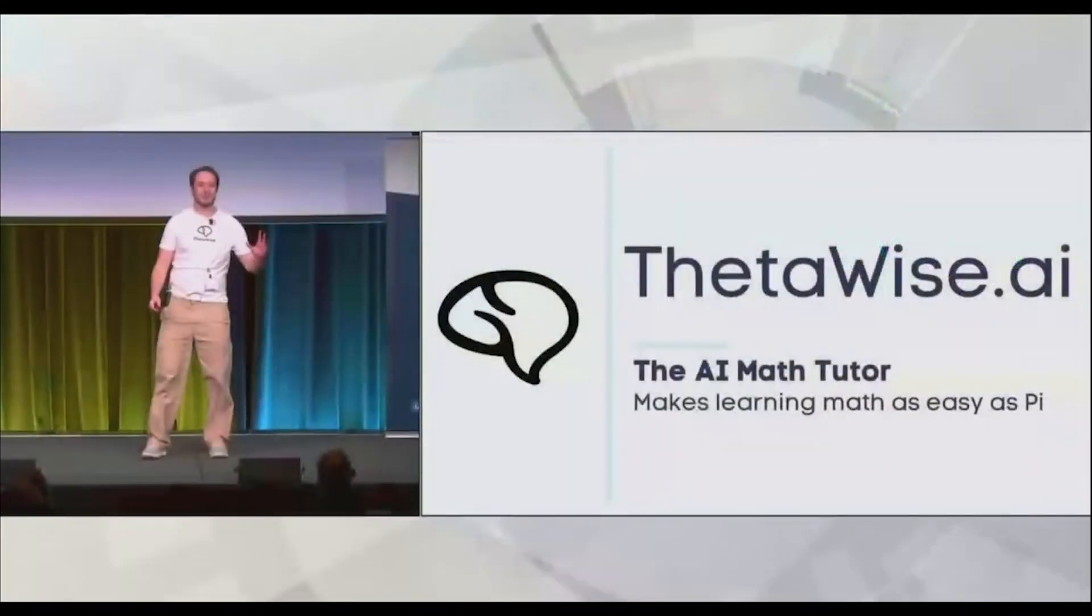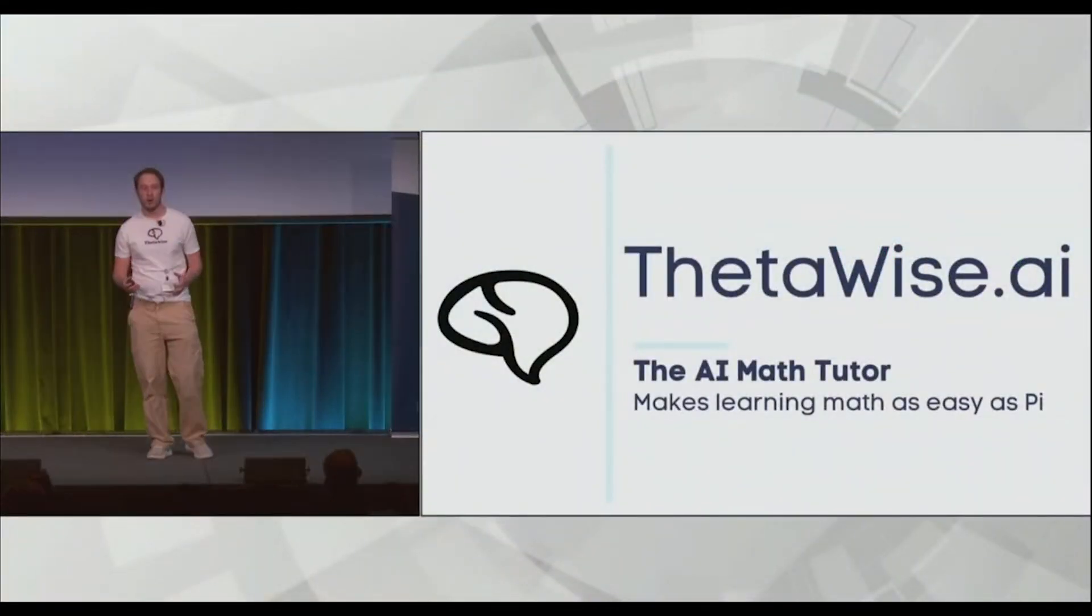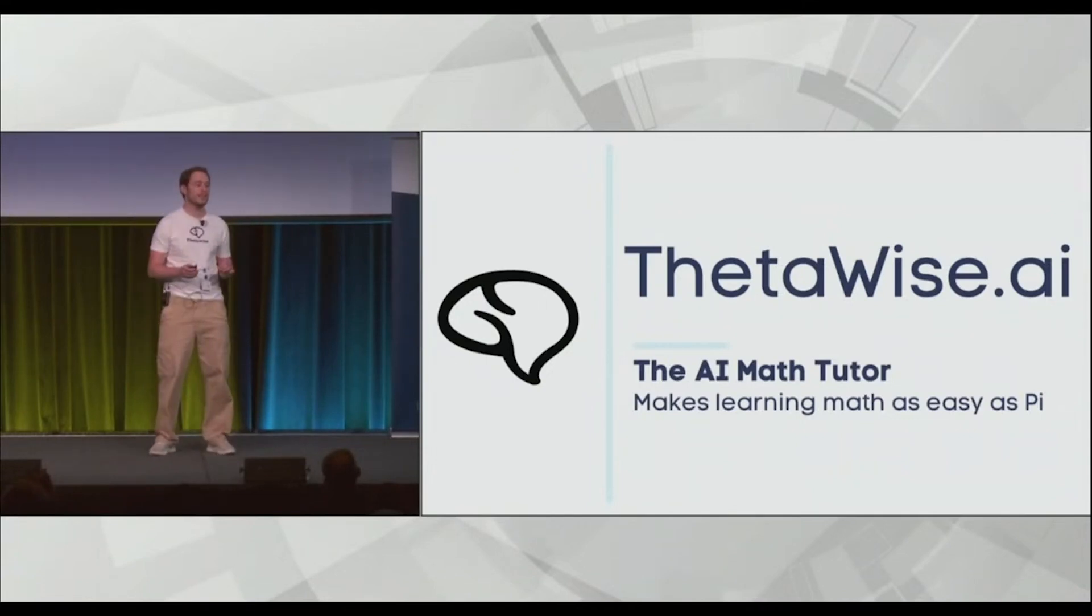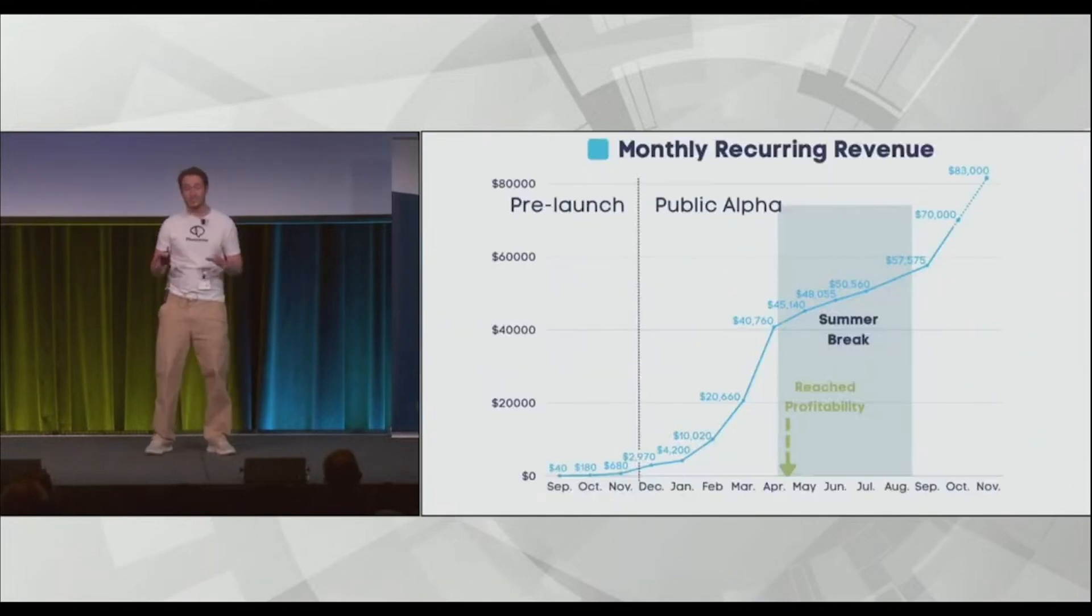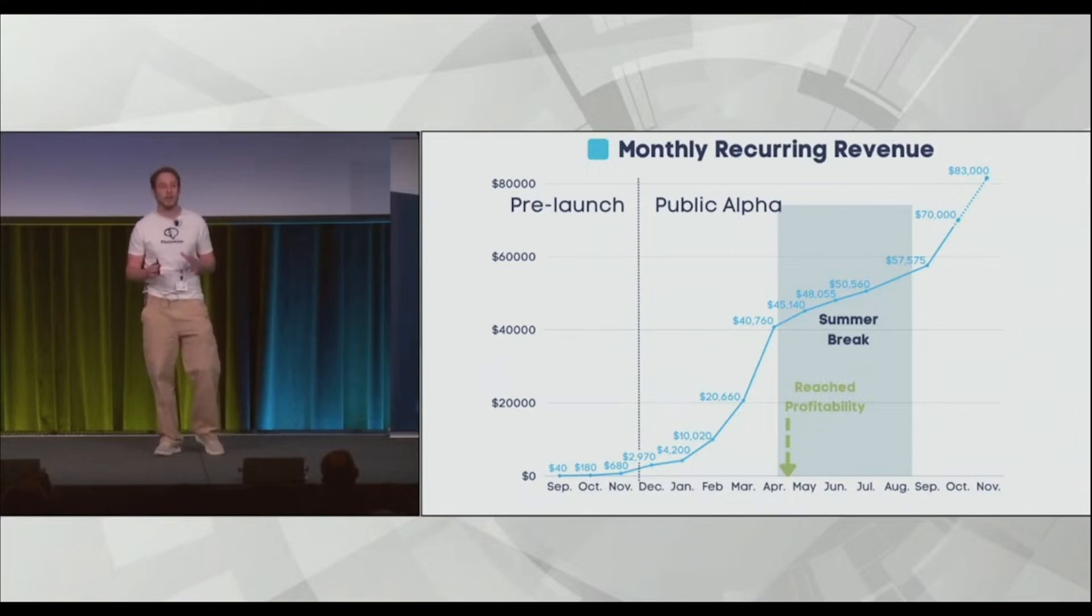Hi, I'm James, co-founder and CEO of ThetaWise, an AI math tutor that provides 24-7 math help to over 130,000 college students across the globe. We wrote our first few lines of code for ThetaWise just 13 months ago, and today we're at $68,000 in monthly recurring revenue.